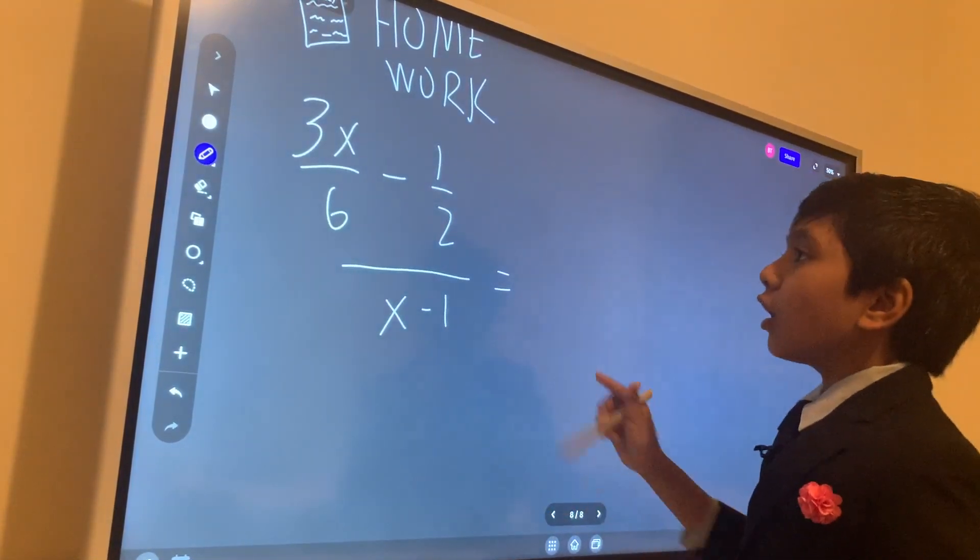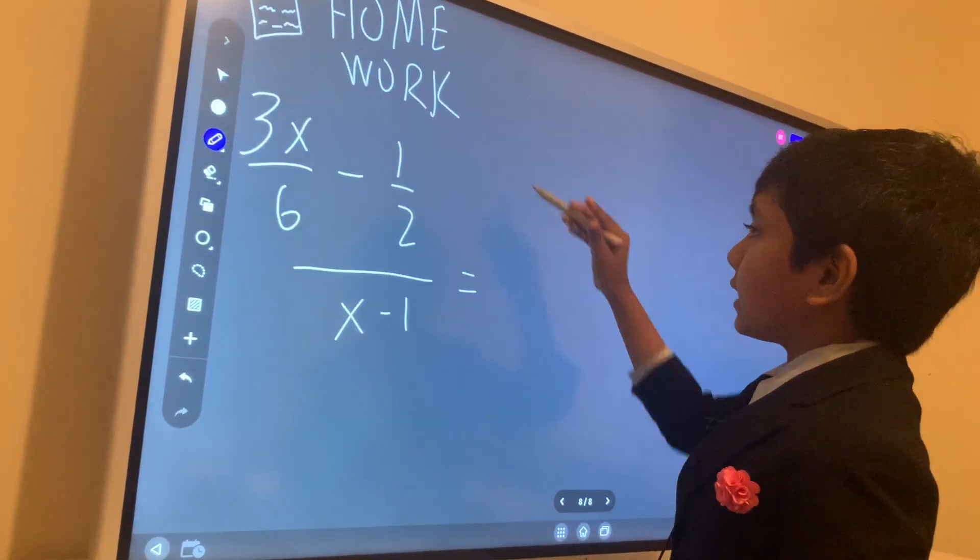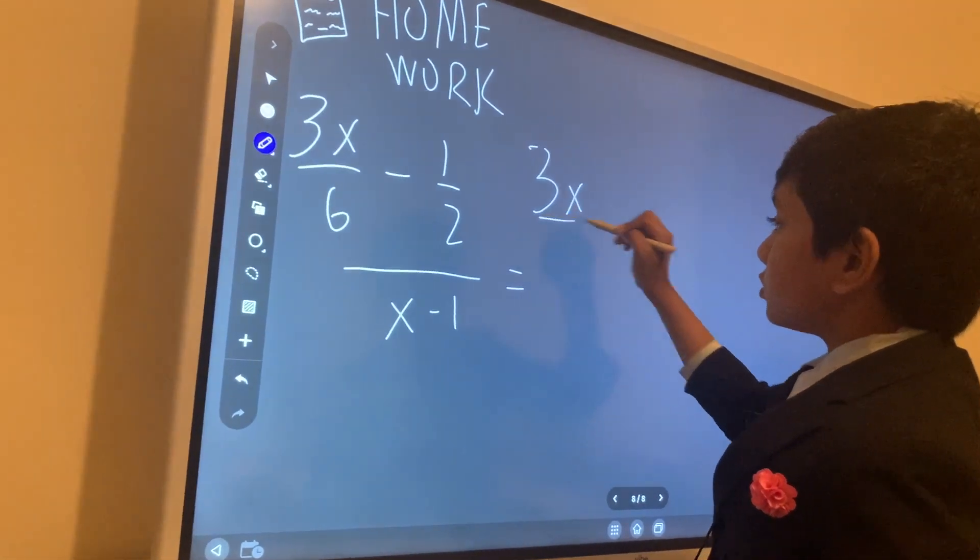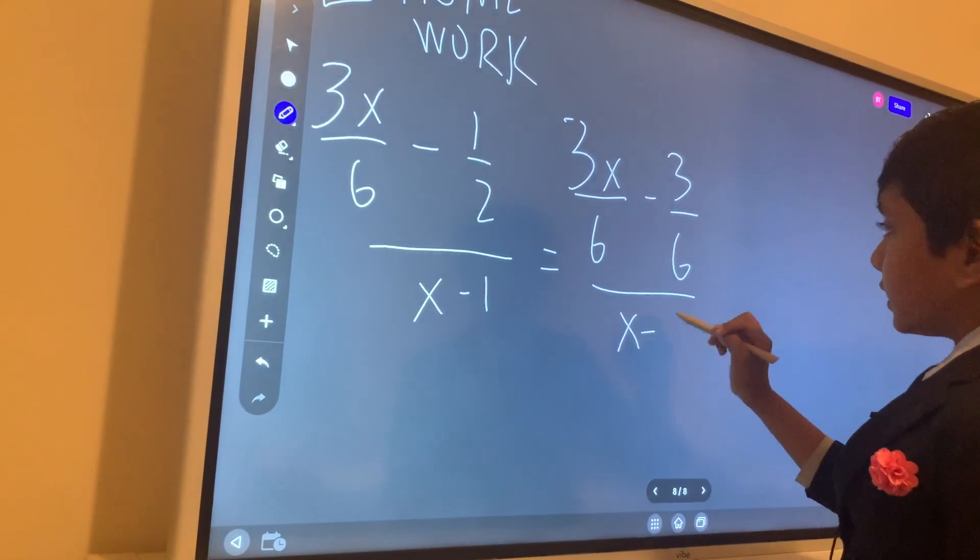And here we go. So let's multiply this by 3 over 3 to get some common denominators. So 3x over 6 minus 3 over 6 over x minus 1.